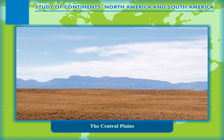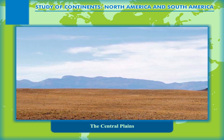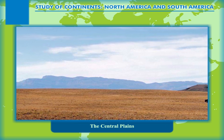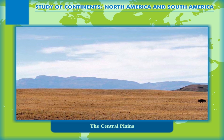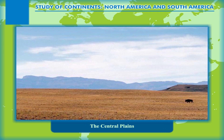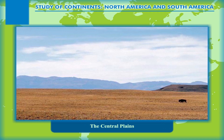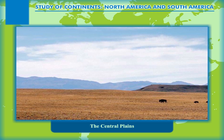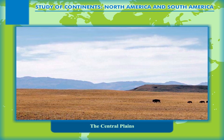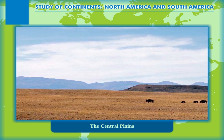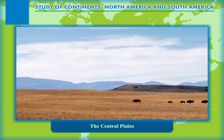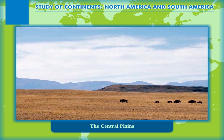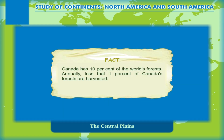The plains are the most suitable areas for agricultural activities, especially in the basin area of the Mississippi and its tributaries. This is because of the fertile alluvial soil deposited by the several rivers flowing through these central lowlands.